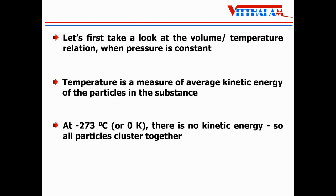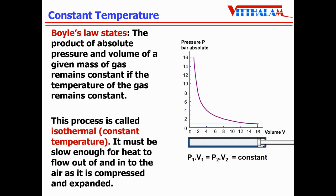At minus 273 degree Celsius — that is zero Kelvin or absolute zero — there is no kinetic energy, so all the particles cluster together. The first law at constant temperature is Boyle's Law. It states that the product of absolute pressure and the volume of a given mass of any gas remains constant, provided the temperature remains constant. This is basically an isothermal process. Practically, to achieve this, it must be slow enough for heat to flow in and out as the gas is compressed or expanded.